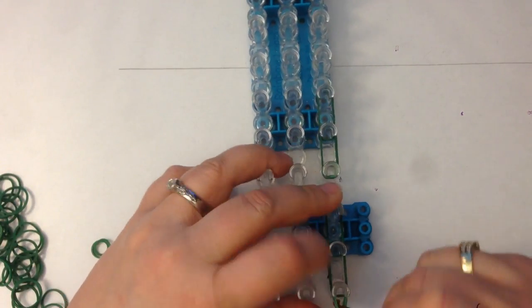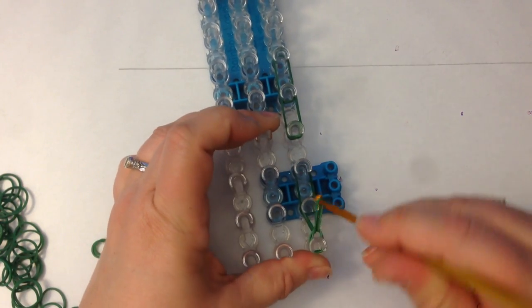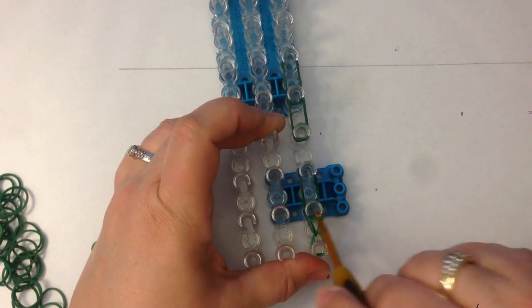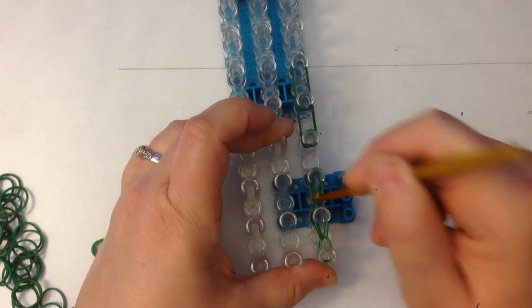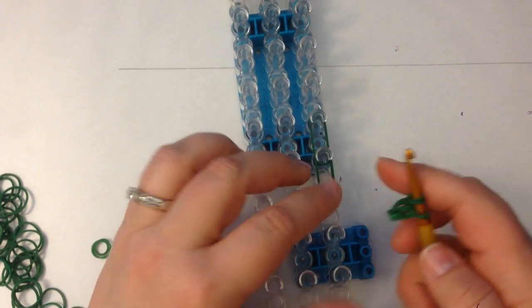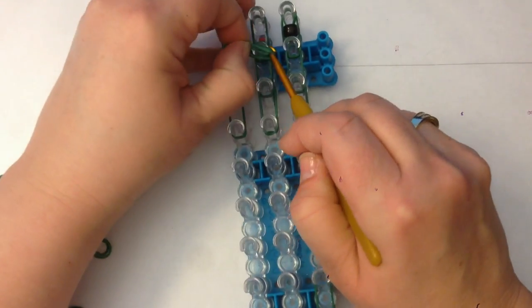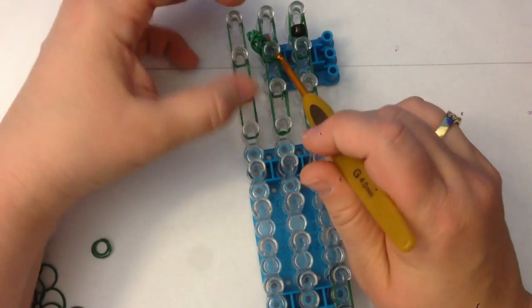We will loom up the first one so go down behind your end cap and loop up and loop up and we'll take this one off our loom. That one can just stay there until we're ready for it. We're going to place this here on that peg there.